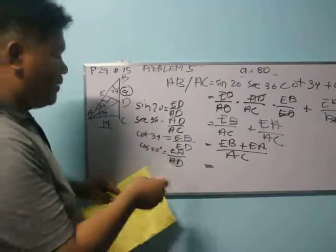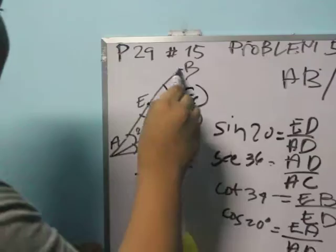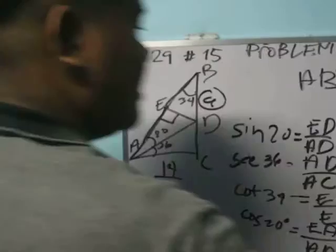So, based on the figure, EB and EA — EB plus EA is the same as AB.